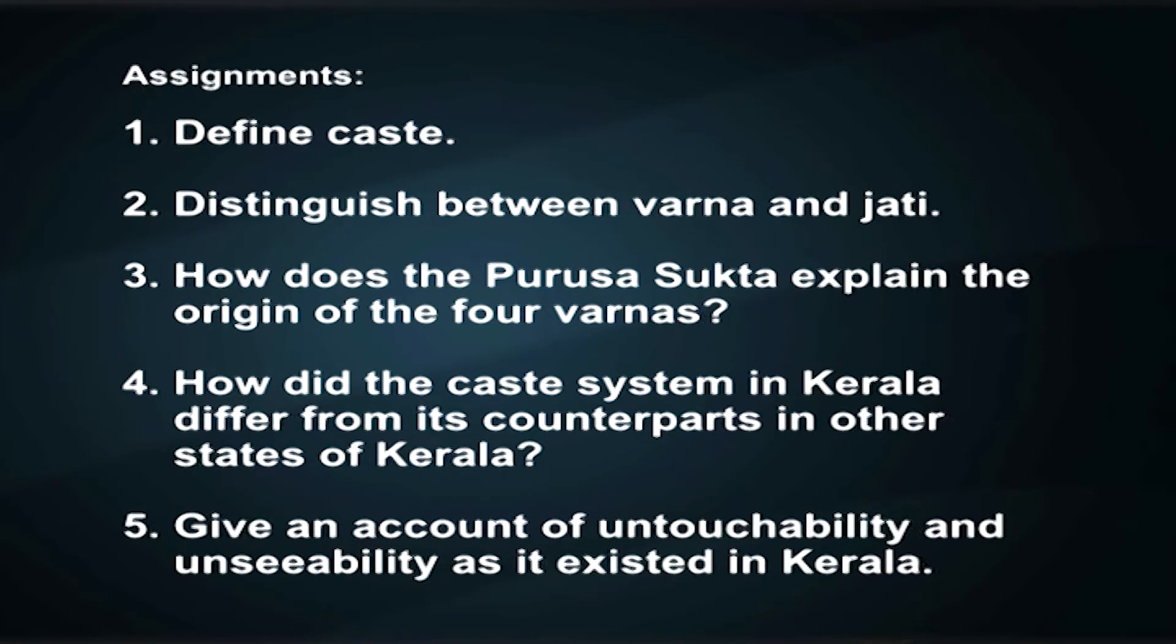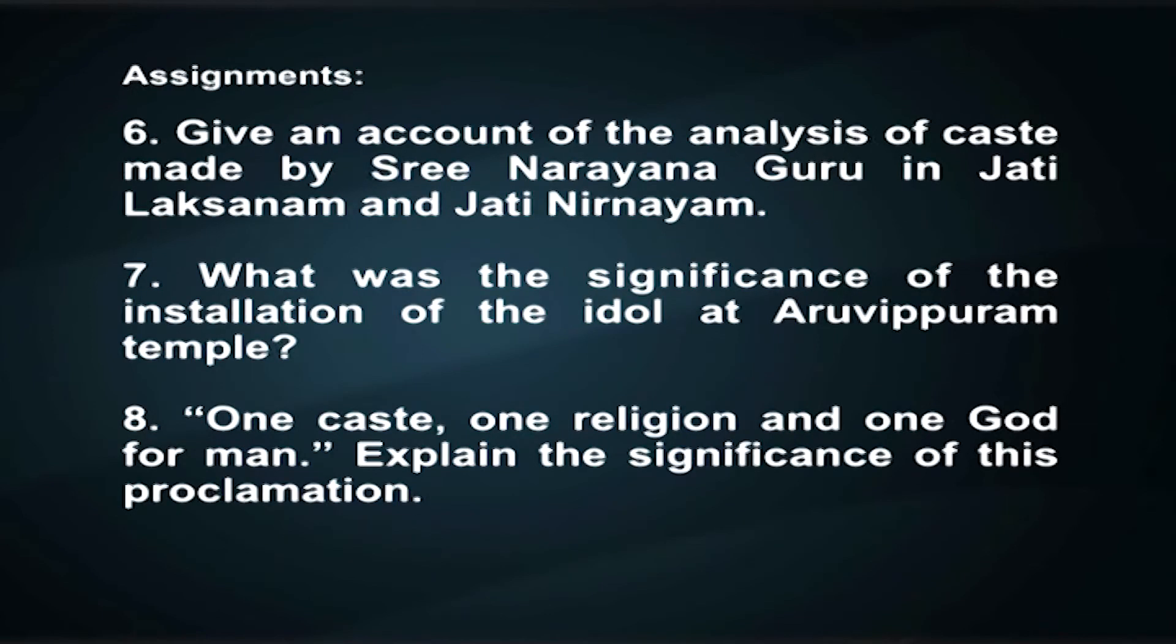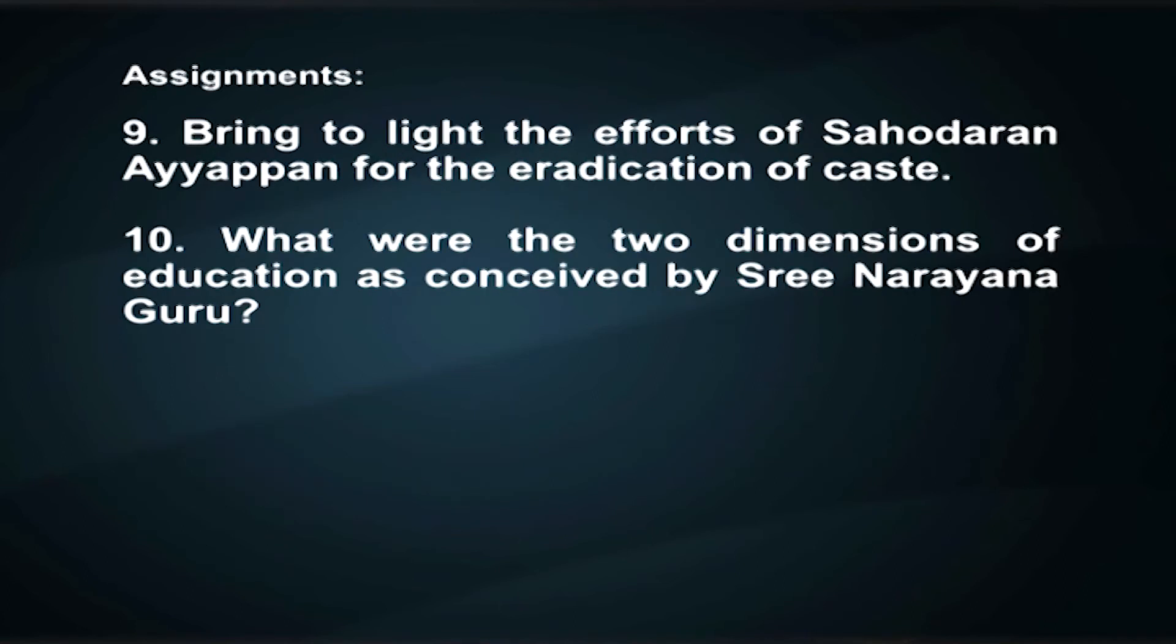Let me now introduce you to some assignments related to this topic. First: define caste. Distinguish between Varna and Jati. How does the Purusha Sukta explain the origin of the four Varnas? How did the caste system in Kerala differ from its counterparts in other states? Give an account of untouchability and unseeability as it existed in Kerala. Give an account of the analysis of caste made by Sri Narayana Guru in Jati Lakshanam and Jati Nirnayam. What was the significance of the installation of the idol at Aruvippuram Temple? Explain the significance of the proclamation: one caste, one religion, and one God for man. Bring to light the efforts of Sahodaran Ayyappan for the eradication of caste. What were the two dimensions of education as conceived by Sri Narayana Guru?